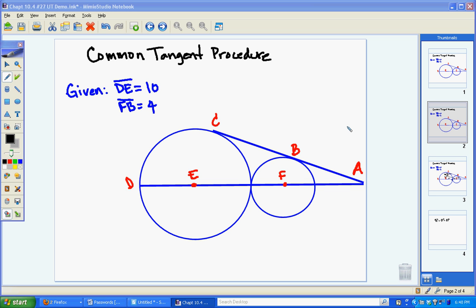So here is an example. We have two circles with a center E and one circle with a center F. We have a common tangent AC that intersects the smaller circle at point B and a larger circle at point C.